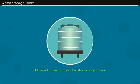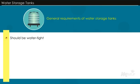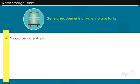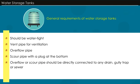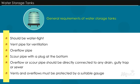The general requirements of domestic water storage tanks are: water tanks should be watertight; they should be provided with a vent pipe for ventilation; they should have an overflow pipe; they should have a scour pipe with a plug at the bottom. An overflow or scour pipe should not be directly connected to any drain, gully trap, or sewer. Vents and overflows must be protected by a suitable gauge or grating to prevent the entry of mosquitoes and insects.